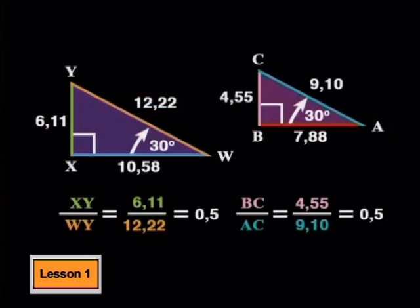This ratio works out to the same constant number in any right angle triangle that has one angle of 30 degrees.